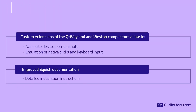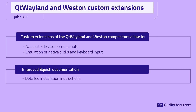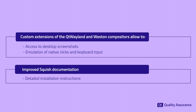We are pleased to announce that we now offer custom extensions of the Qt Wayland and Weston Compositors, catering to Squish users testing applications run with the Wayland platform architecture. These extensions grant you access to desktop screenshots, enable emulation of native clicks and keyboard input, and more. Comprehensive instructions on how to install and effectively use these extensions are now available in the improved Squish documentation.